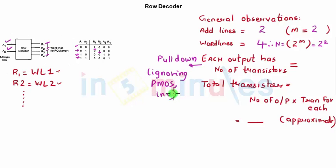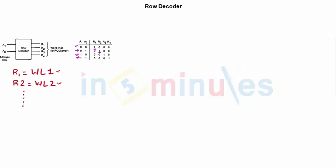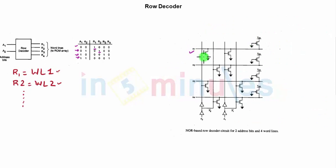Each output has how many number of transistors? If you see, R1 has 2, R2 has 2, R3 has 2. We are ignoring this right now just for our calculation. So what we can say is that each output has 2 transistors.